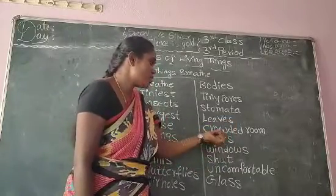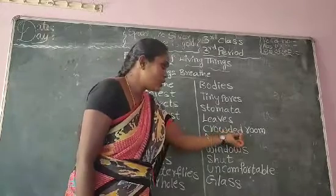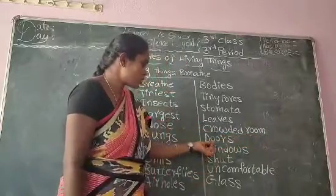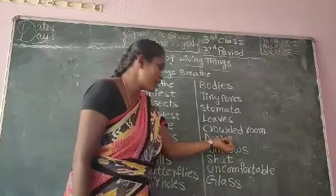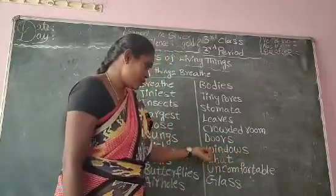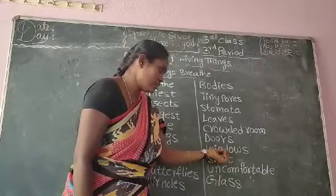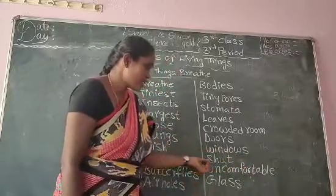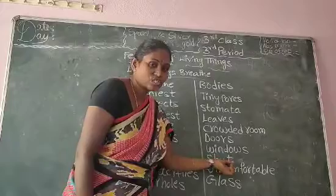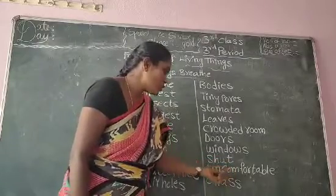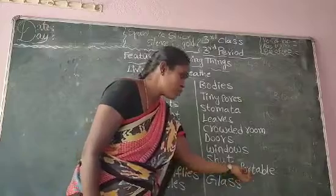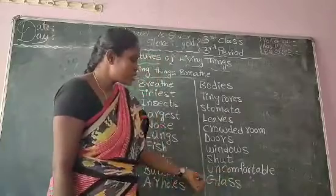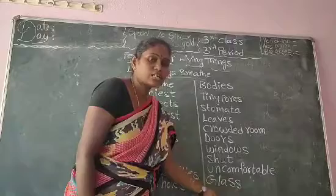Crowded room: C-R-O-W-D-E-D R-O-O-M. Doors: D-O-O-R-S. Windows: W-I-N-D-O-W-S. Shut: S-H-U-T. Uncomfortable: U-N-C-O-M-F-O-R-T-A-B-L-E. Glass: G-L-A-S-S.